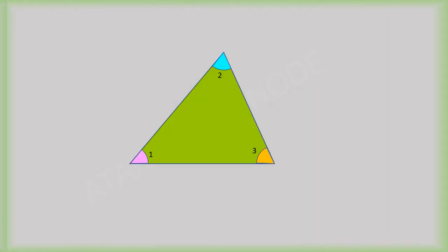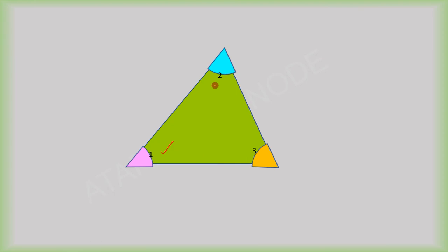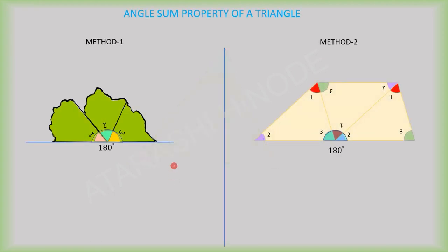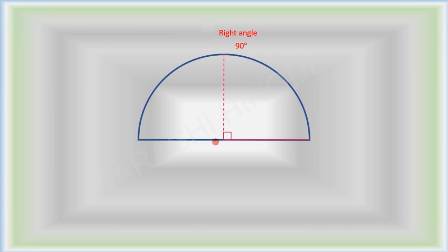This is a property connecting the three angles of a triangle. Today we are going to see this through two methods. Before that, let us have a glimpse on angles.